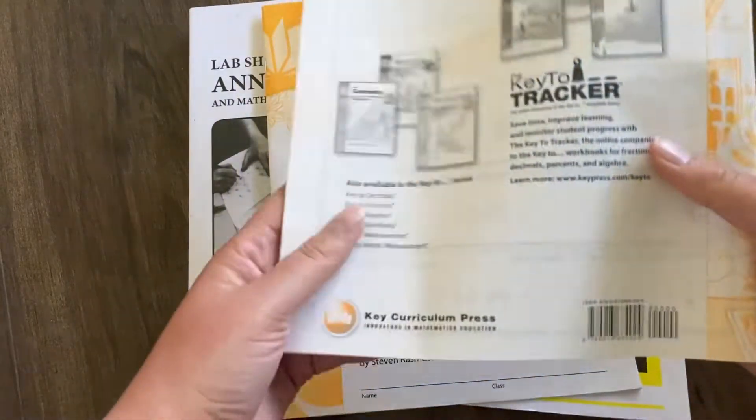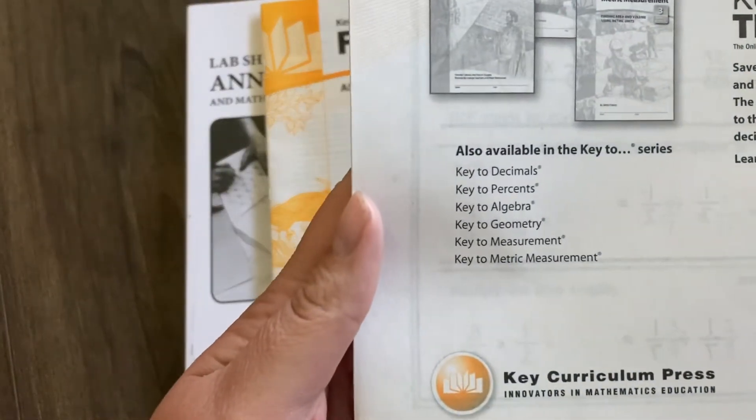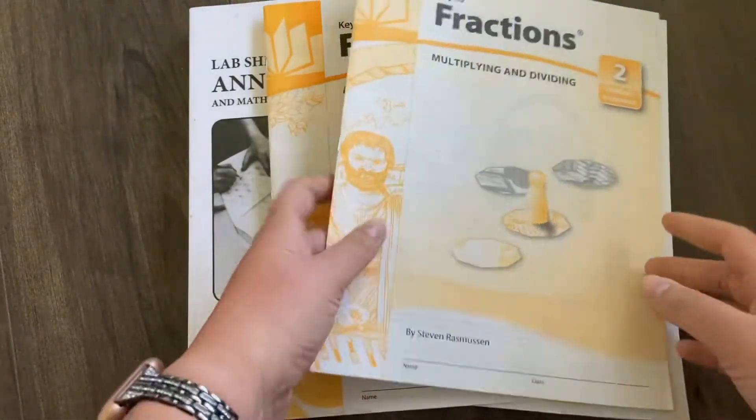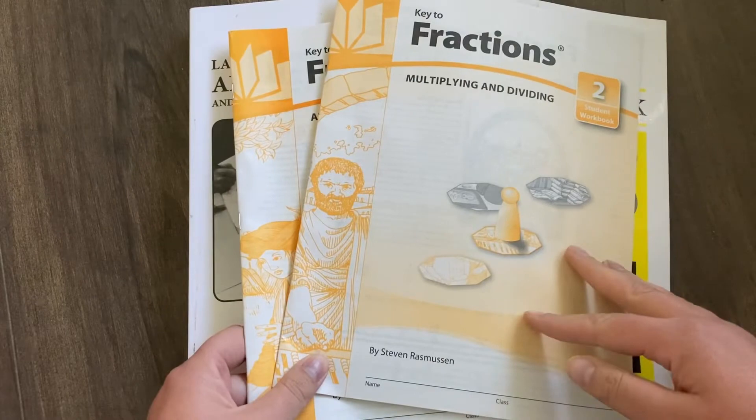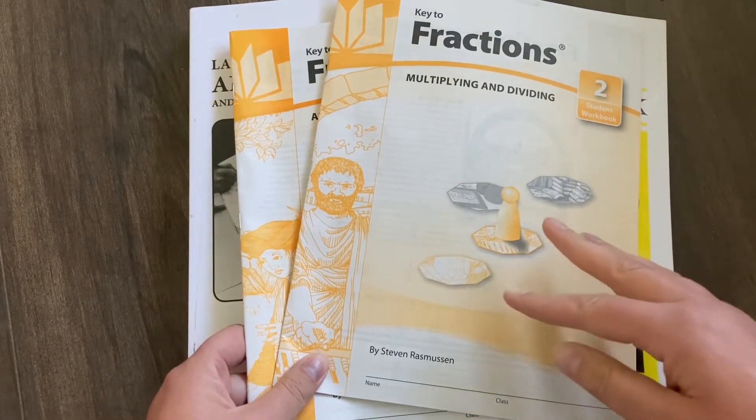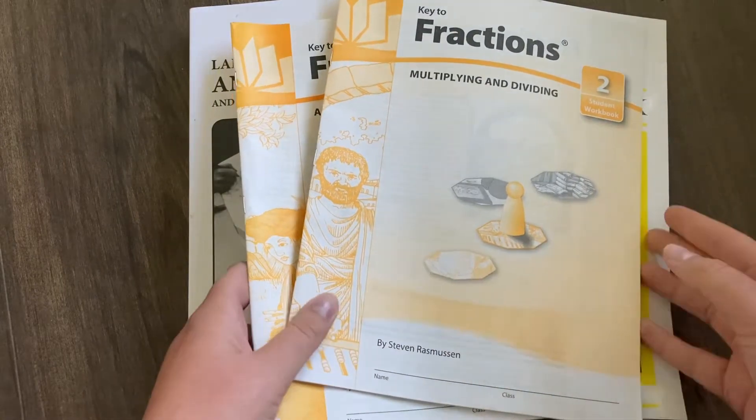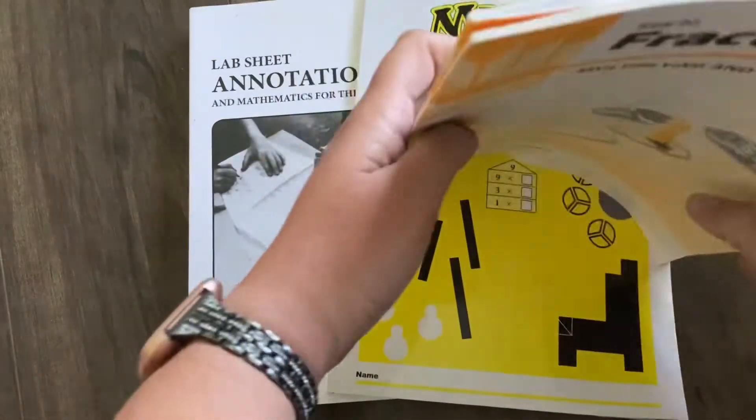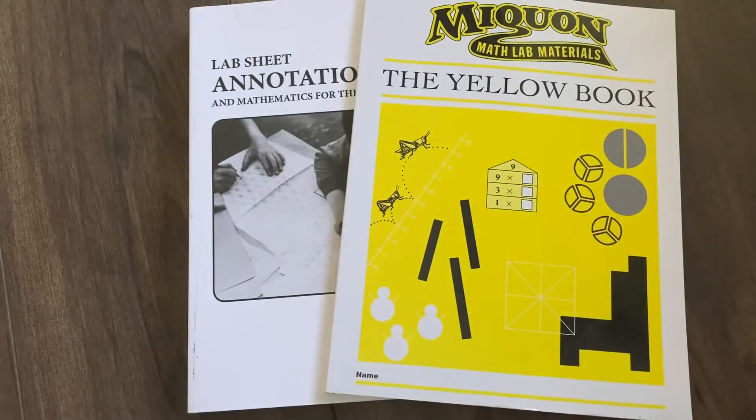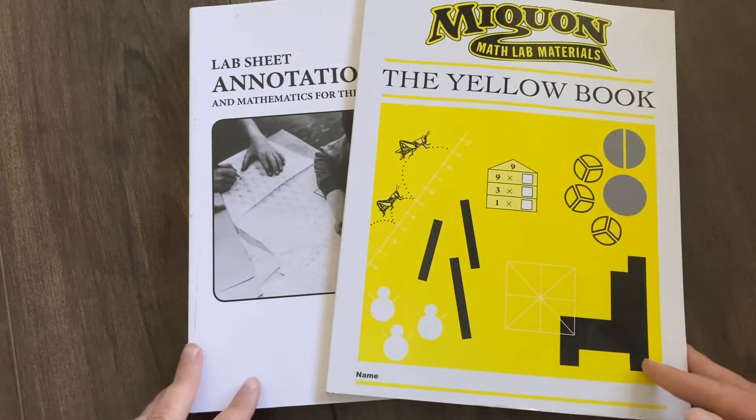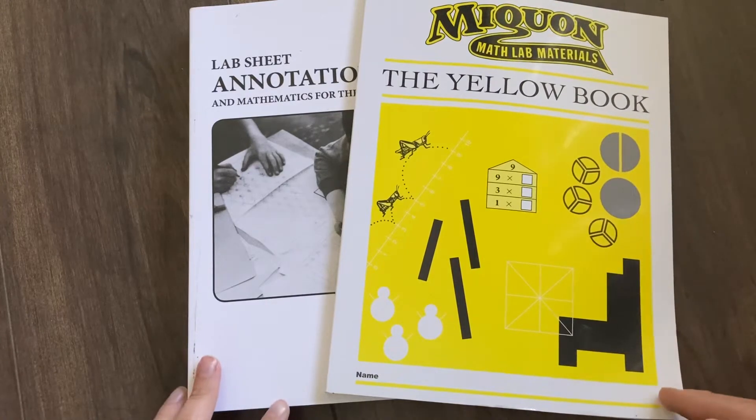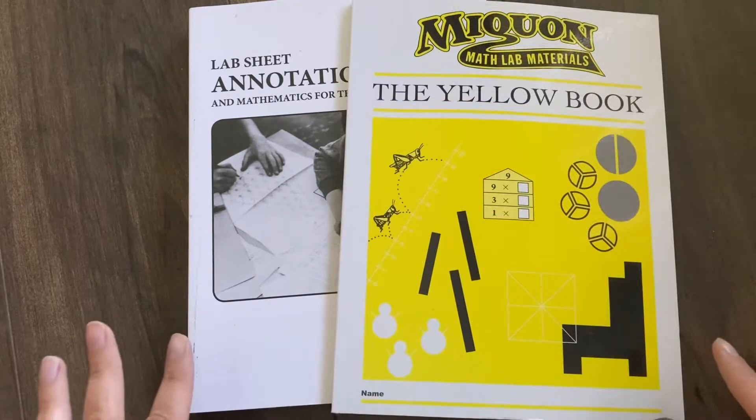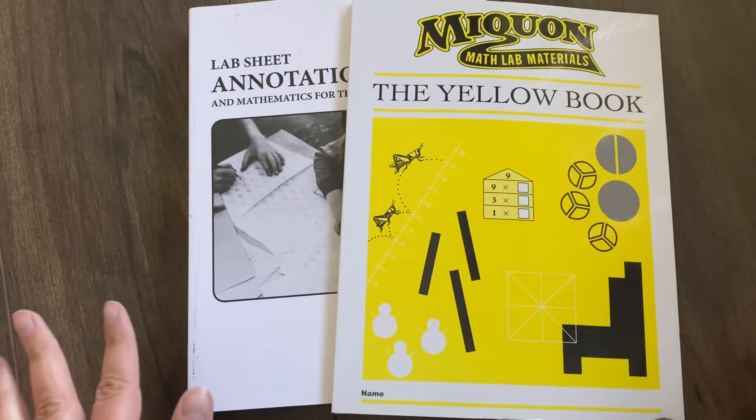They have Key to Fractions, Key to Geometry, Key to Decimals. I used this when I was being homeschooled and I'm using it for my older student. I was looking for something for my elementary age students, so I picked up Miquon Math. Now I will tell you from the get-go, this is not for us. The sequencing is very different.